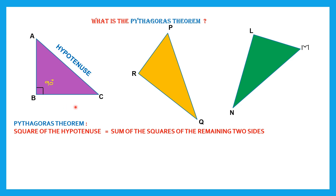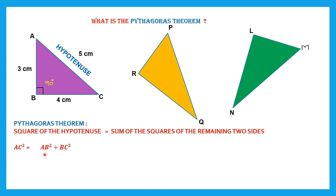Let's do this with the help of an example and give it values. Let's say AB is 3 cm, BC is 4 cm, and AC is 5 cm. According to the Pythagoras Theorem, AC square — which is the hypotenuse — should be equal to the sum of the squares of the other two sides, AB and BC.